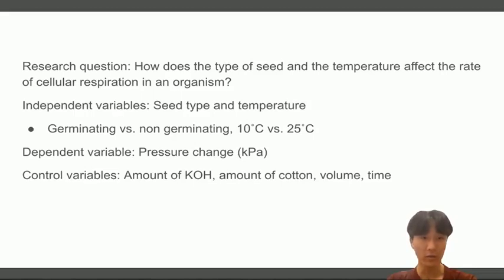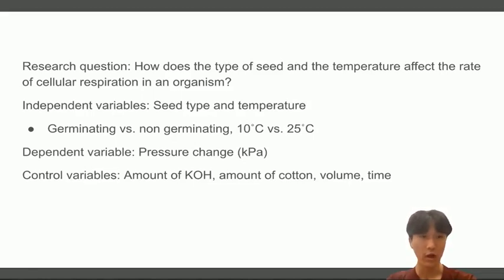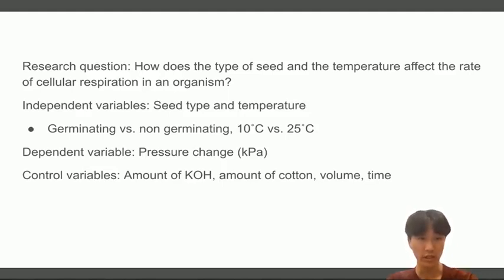Our independent variables were the seed type and temperature. For seed type, we measured germinating versus non-germinating seeds, with glass beads as our control. For temperature, we carried out two experiments — one at 10 degrees and one at 25 degrees. Our dependent variable was the pressure change in kPa.